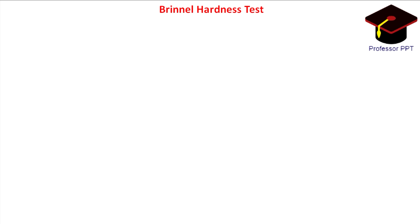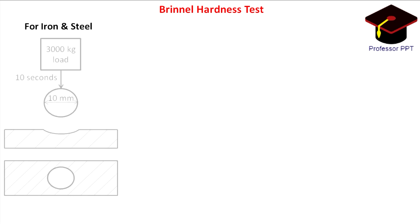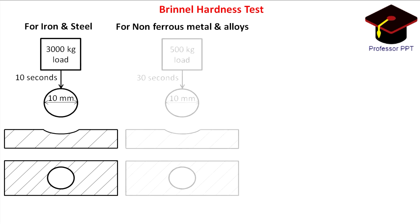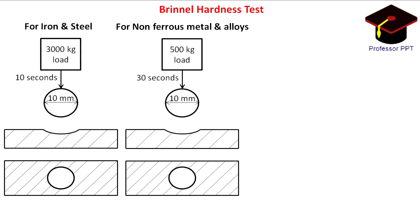For the Brinell hardness test, for testing iron and steel, a load of 3000 kg is applied on an indenter ball of 10 mm diameter for 10 seconds. For non-ferrous metals and alloys, a load of 500 kg is applied through the same indenter for 30 seconds. The load is applied by means of a hydraulic mechanism.